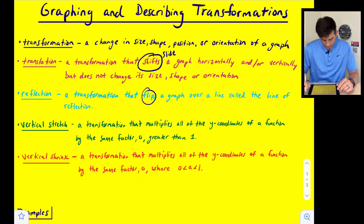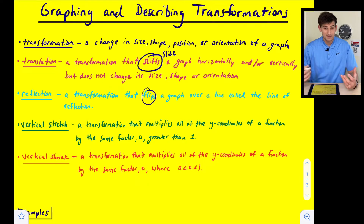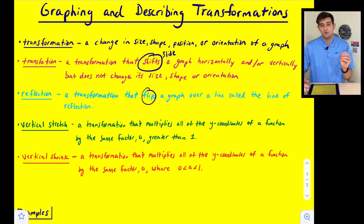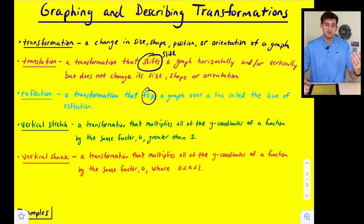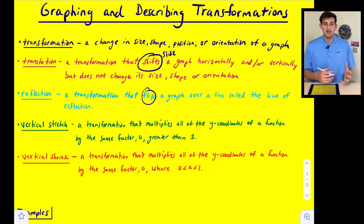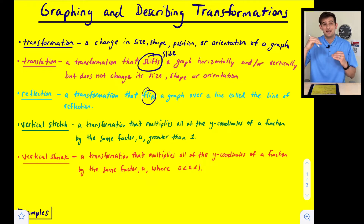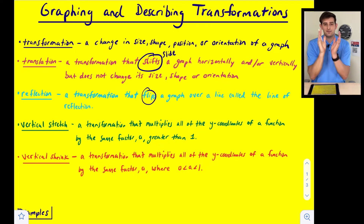A vertical shrink is a transformation that multiplies all of the y-coordinates of a function by the same factor a — the exact same definition as a vertical stretch — but the difference is that what we're multiplying by is a fraction between zero and one, like one-half or one-third. It's going to make our graph less steep, or if we're talking about a parabola or absolute value graph, it's going to make it open wider.